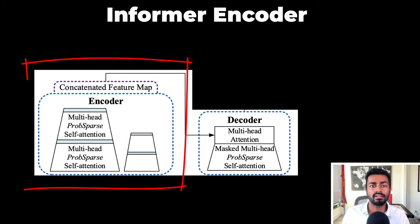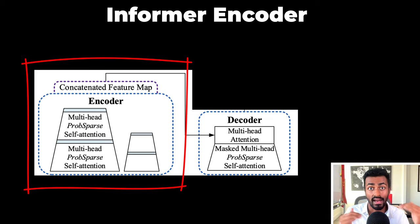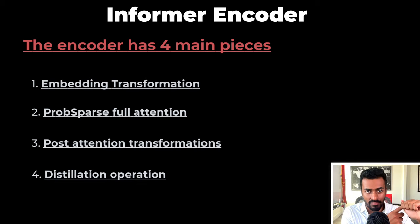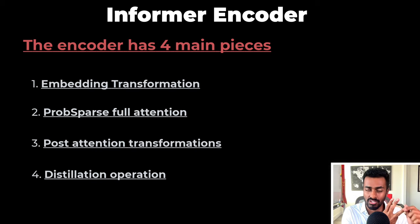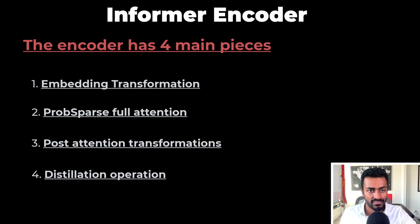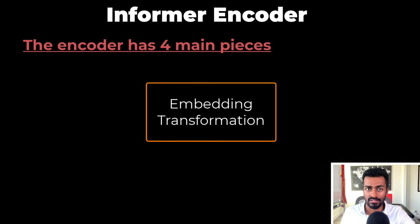Now we're going to drill down into the encoder, adding more details with every pass. The encoder has four main pieces: the embedding transformation, the prob sparse full attention, the post-attention transformations, and then the distillation operation. Let's take a look at each part, starting with the embedding transformation.